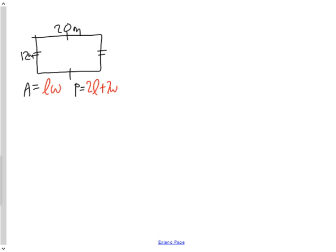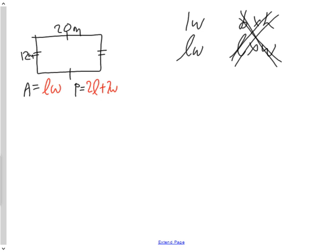For rectangles, the area formula is LW. Use a cursive L, not a small printed L, because a small L looks like the number one. When I substitute, I put 20 for the length and a bracket with 12 for the width. That means 20 times 12, which is 240. Since we're dealing with area, the answer is 240 meters squared.